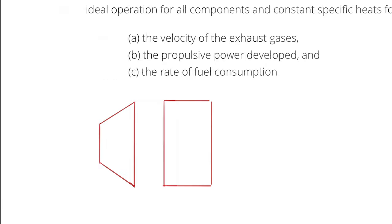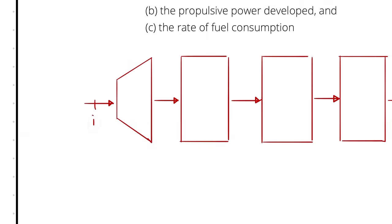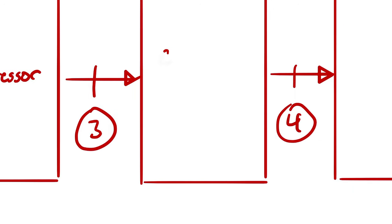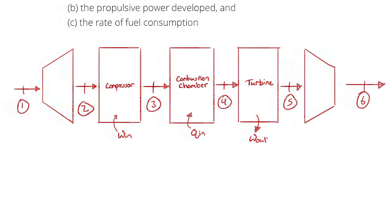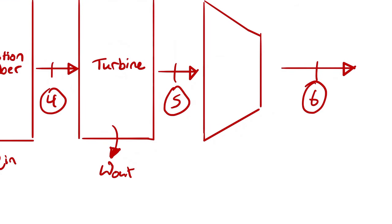Beginning with a diagram — the center three components are the same devices that make up our simple Brayton cycle: a compressor, which increases the pressure of the gas prior to combustion; then a combustion chamber, which adds energy to the gas; and a turbine, which harvests some power out of that expansion. But our goal is no longer to produce power — we want thrust, which requires a lot of velocity. So we tack on a nozzle at the end to convert the remaining enthalpy after the turbine into kinetic energy.